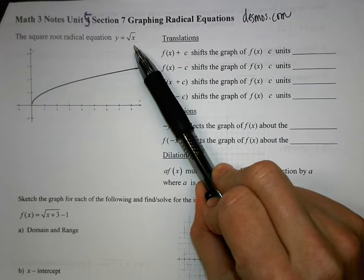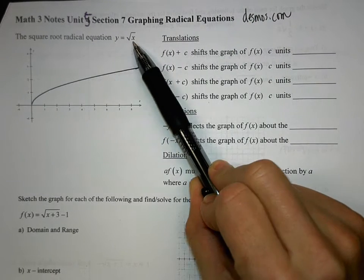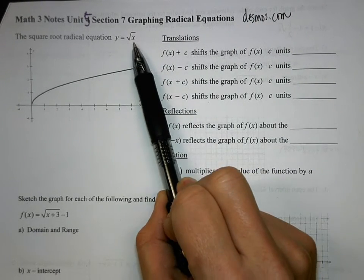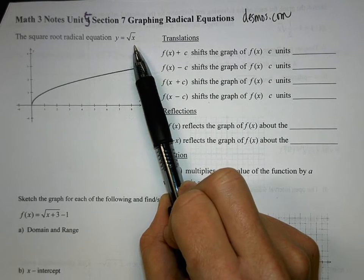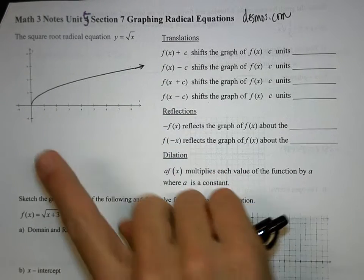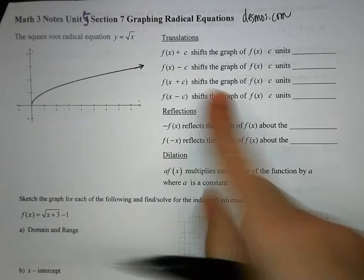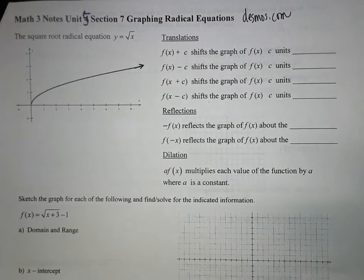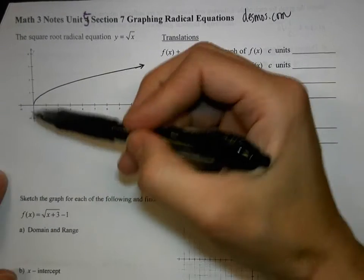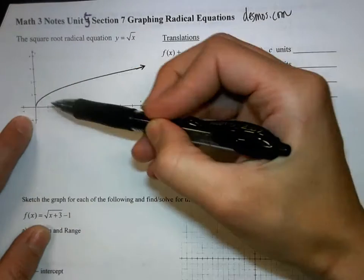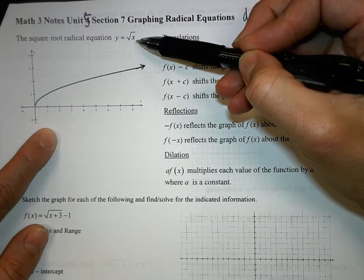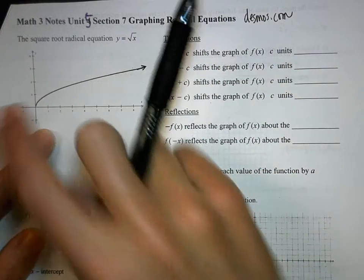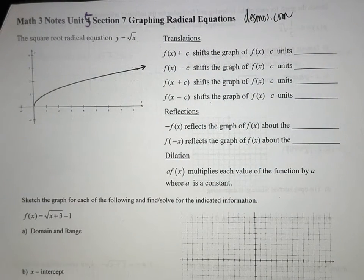The way square root equations work — can I have a negative under a root and make a real number? No. That is why this is basically half of a sideways parabola. Because if you put a negative 1 under here, you would get an imaginary number. That is why there seems to be just half of a graph.